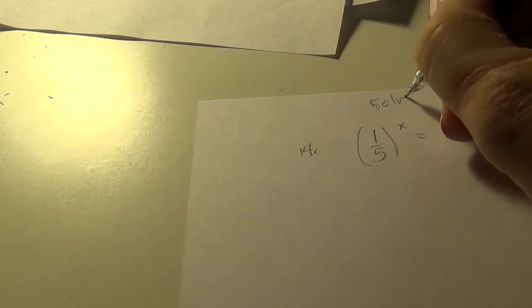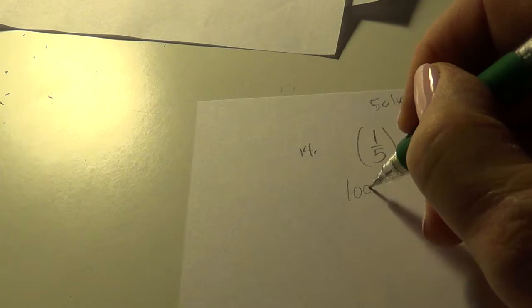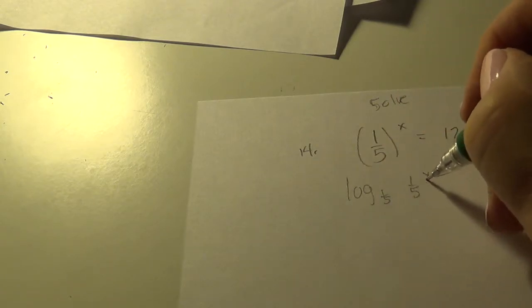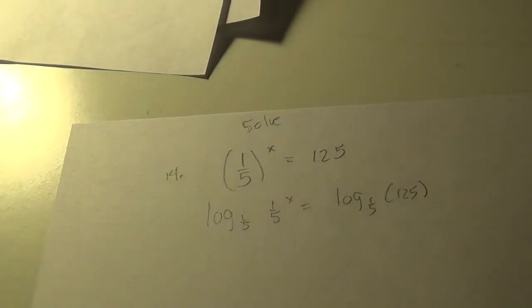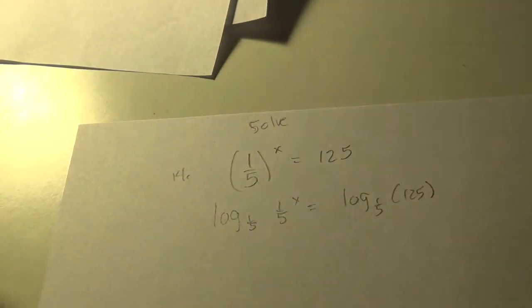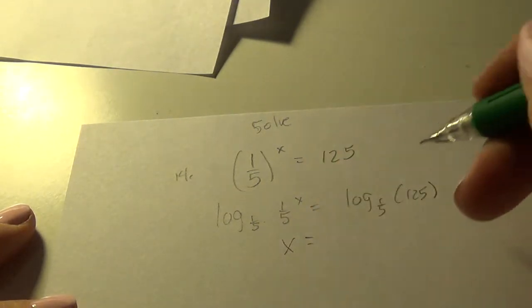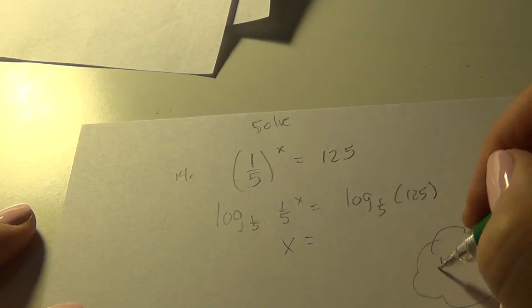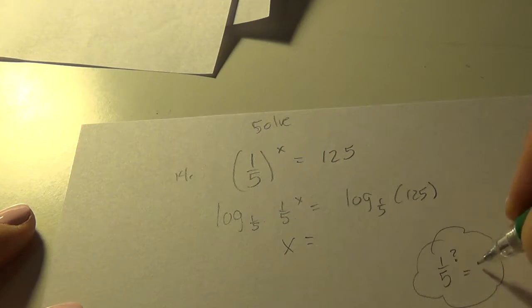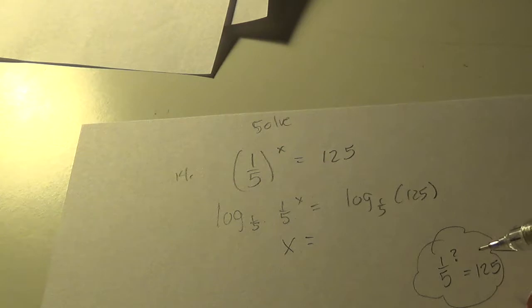One-fifth raised to the x equals 125. And the command is solve, so we want to find x. We want to get the x down. So we're going to take log to the base one-fifth of one-fifth to the x equals log to the base one-fifth of 125. So when we do that, we get what exponent do I give one-fifth to get one-fifth to the x? x. And now what exponent do I give? So here's what's in my thoughts: one-fifth raised to the what gives me 125?